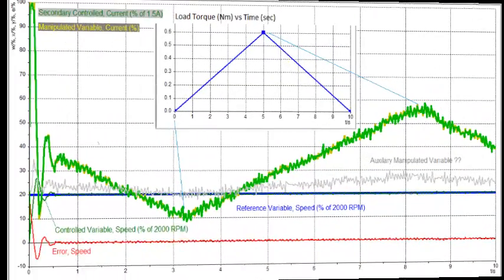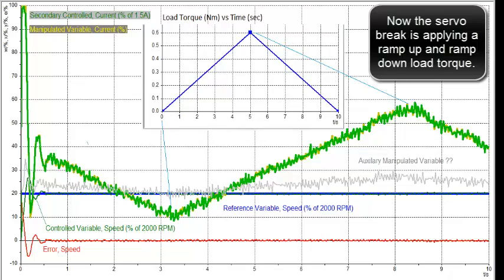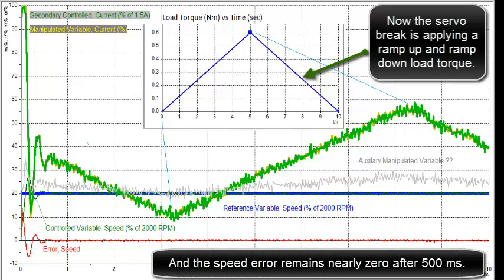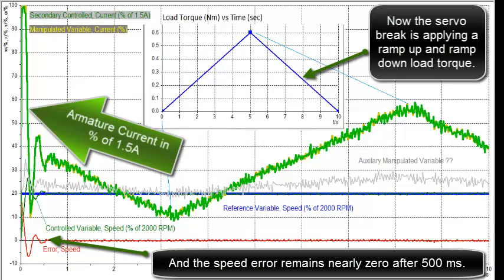Now the servo brake is applying a ramp up and a ramp down load torque, and the speed error remains nearly zero after 500 milliseconds. The green is the armature current in percent of 1.5 amps.